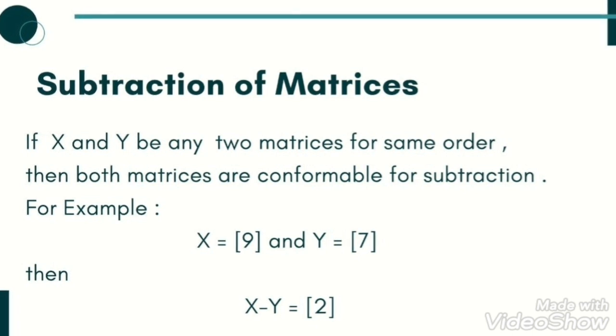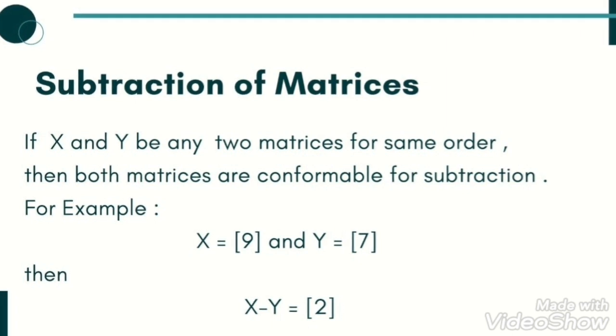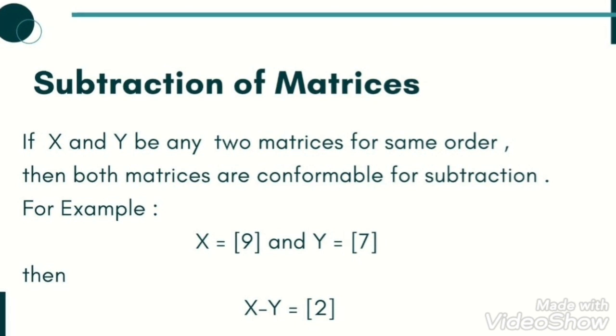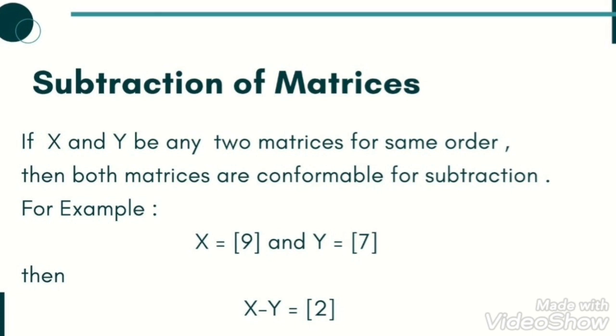If the matrices are conformable, you can subtract them. Subtract by taking first matrix's element and subtracting second matrix's corresponding element: 9 minus 7 equals 2. That's all for today. If you like my video, send me your feedback in the comment section. Take care, Allah hafiz.